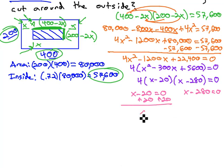Add 20, and we get x equals 20 for one possible answer. Add 280, and we get x equals 280 for another possible answer.